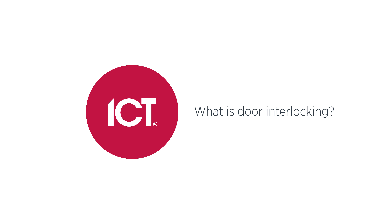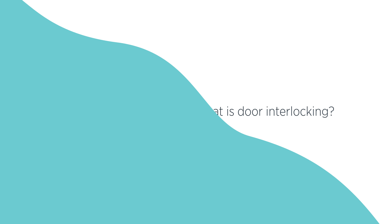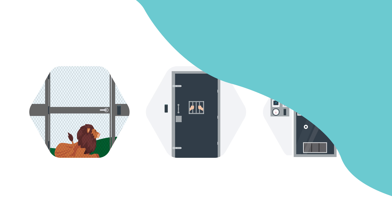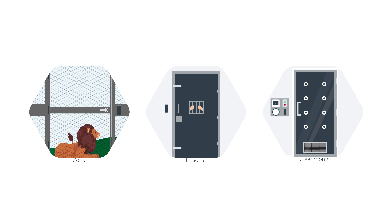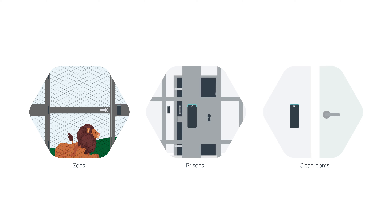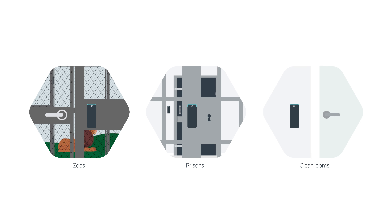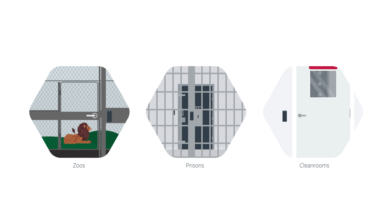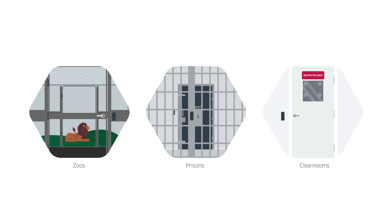Door interlocks are used to help secure and control premises, keeping people or animals inside while still providing safe access for authorized people. They ensure that only a single interconnected door can be opened at any one time, preventing a direct path between hazardous and safe sides.